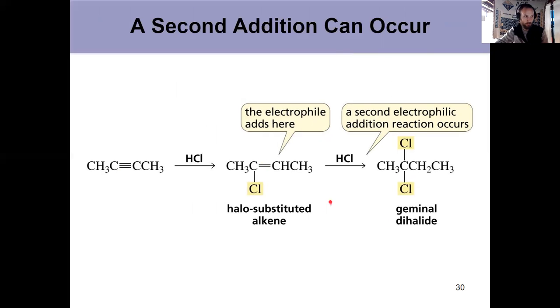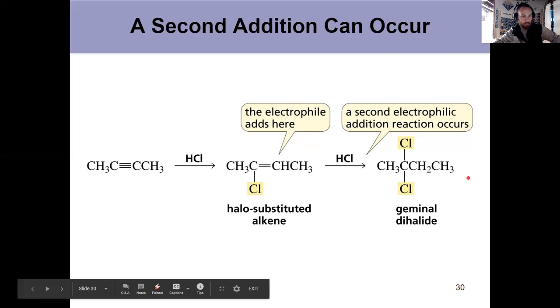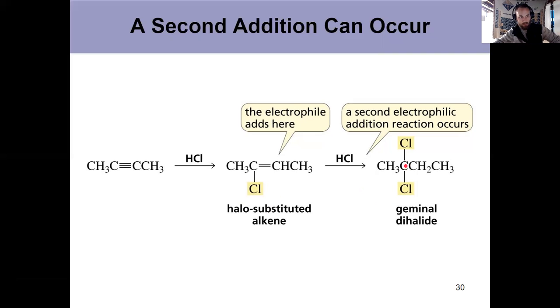Some new terms here: a halo substituted alkene, so it's an alkene with a halogen coming right off of one of those vinyl carbons. And then the final product with excess HCl is a geminal dihalide. That means a molecule with two halogens coming off of the same carbon. So two Cls here, that's a geminal dihalide.